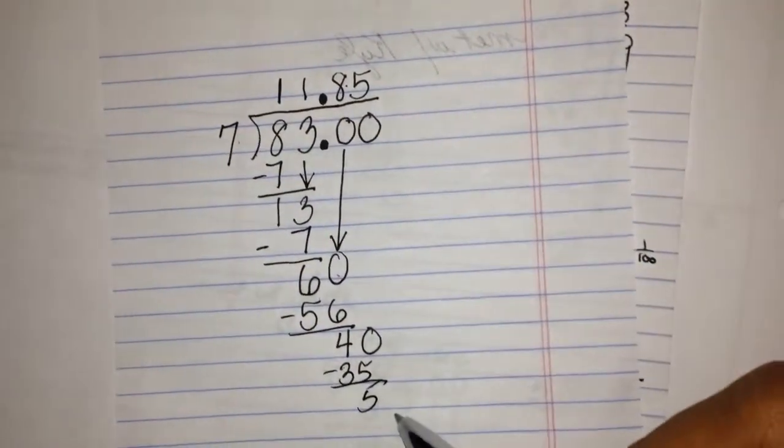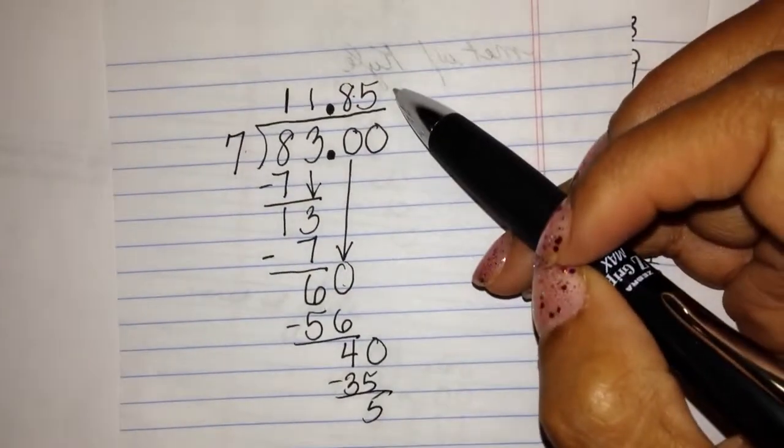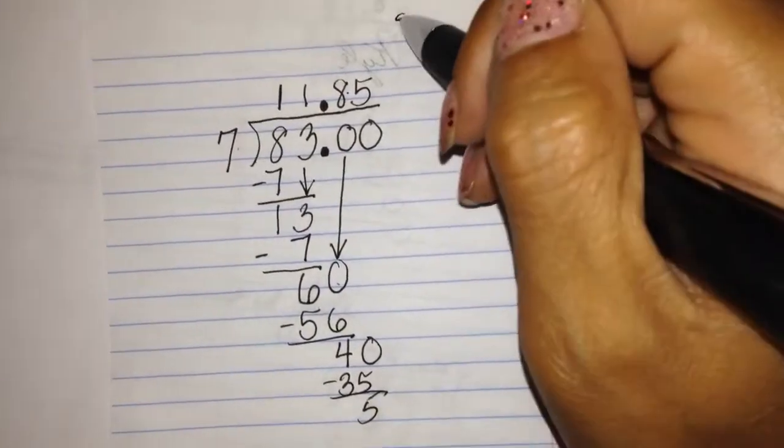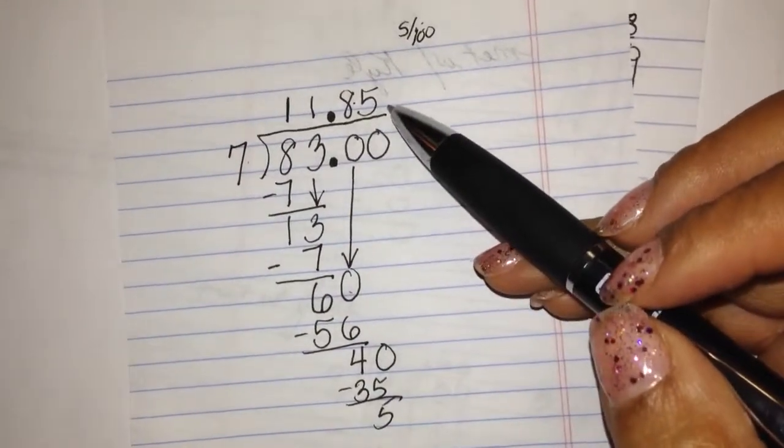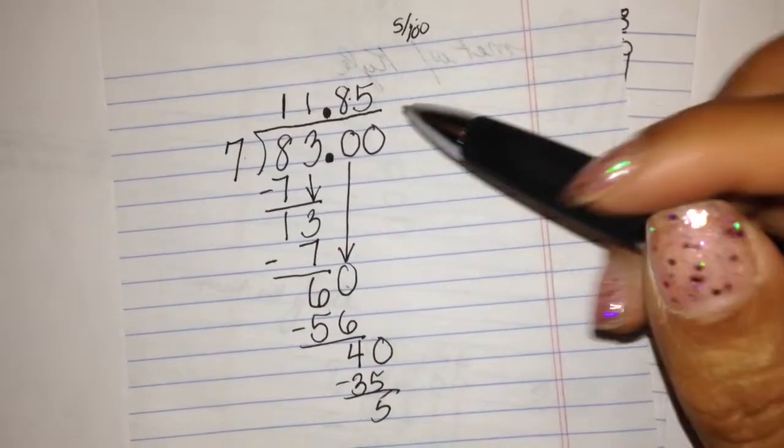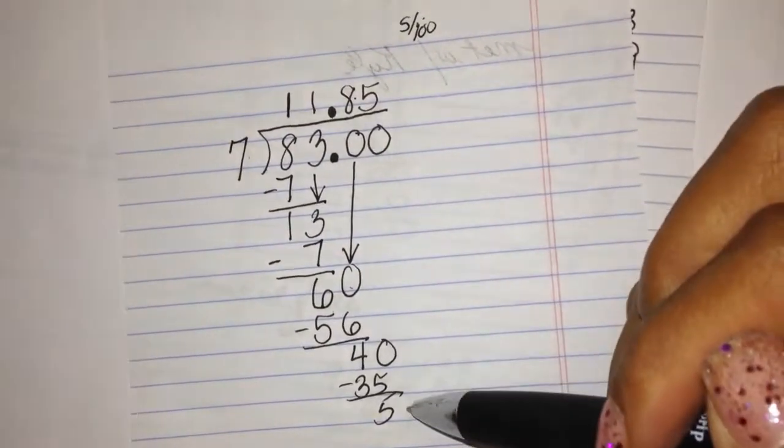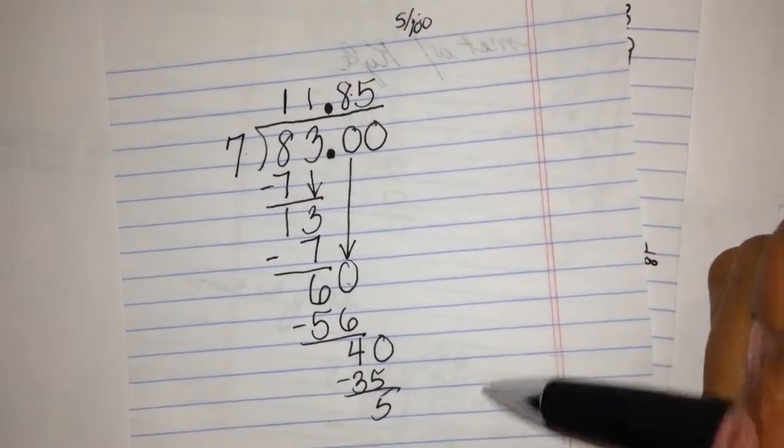And even though I have a 5 left over, that 5 is so tiny. It's only worth five hundredths. We're not even going to think about it or write anything for it. If I wanted, I can keep on adding more zeros and keep on dividing and make this a 50 and keep going.